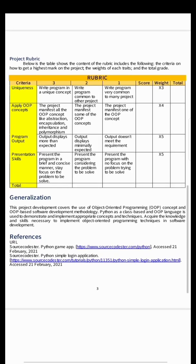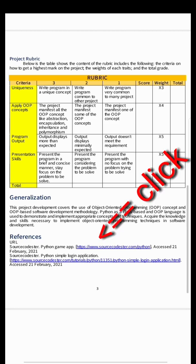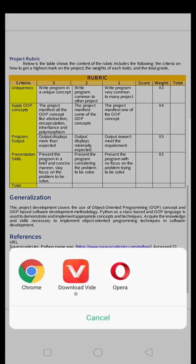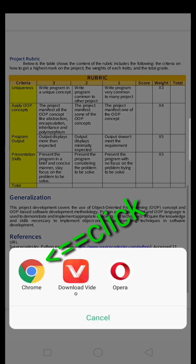Take a look at the references. I'll show you how to download an existing game application to give you a wide perspective for your project. Just click the link www.sourcecadestor.com/python. This will direct you to their webpage where you can download an existing application for further reference.